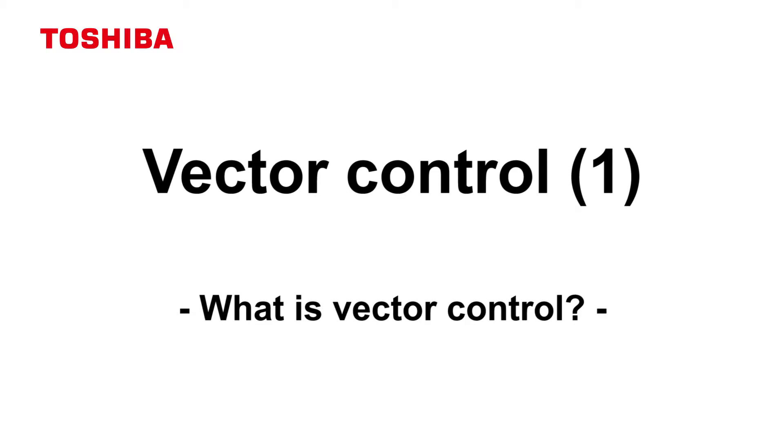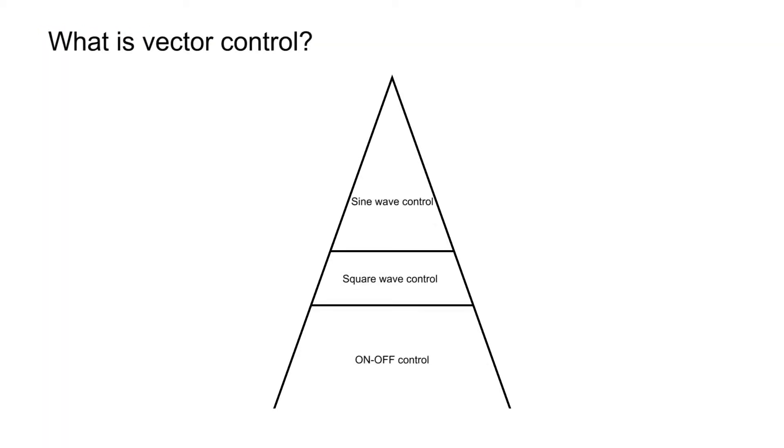This video explains vector control. Vector control is one of the motor control systems. There are three motor control methods: simply turning on and off a motor, square wave control using inverter technology, and sine wave control.